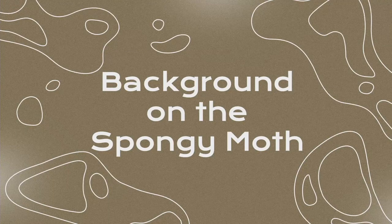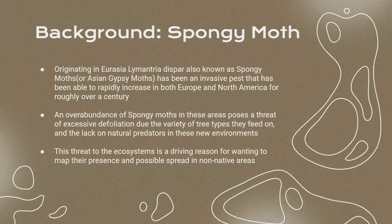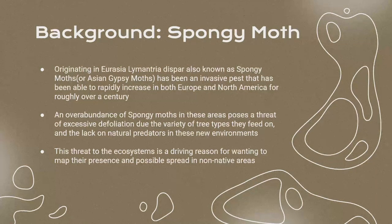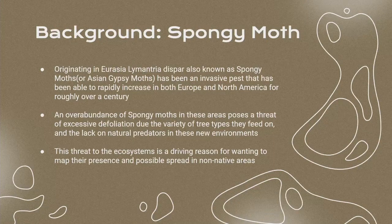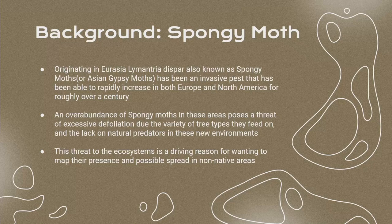I'm going to start off with some background information on the spongy moth, also known as Lymantria dispar. It originated in Eurasia and has been able to rapidly increase in both Europe and North America over roughly the past century. There is an overabundance of spongy moth caterpillars causing excessive defoliation because they eat a very wide variety of trees and have a natural lack of predators in these new environments. This excessive defoliation threatens trees, making them vulnerable to disease, other insects, and extreme environmental events. Possible loss of these ecosystems would be detrimental, which is a driving reason to map the spread and possible invasion of the spongy moth in non-native areas.